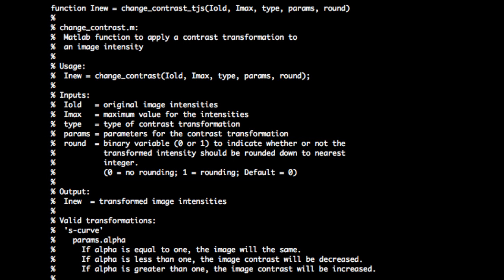The code was written in anticipation of being used for other types of transformations. At this point, though, the only valid transformation is the S-curve that we just spoke about.